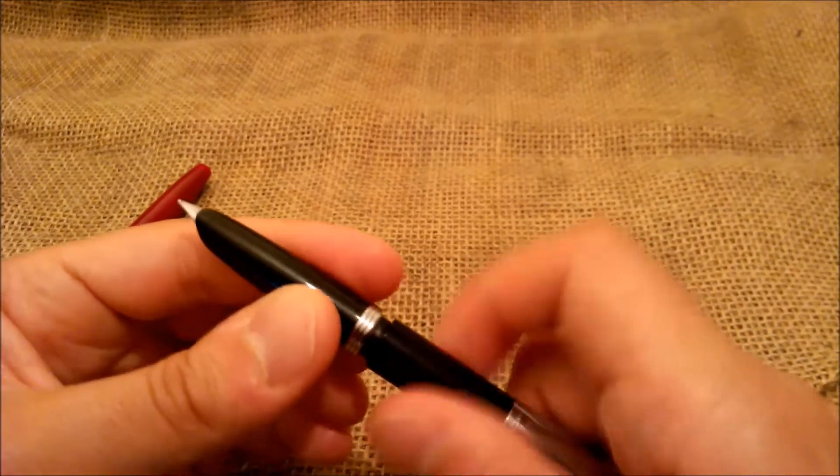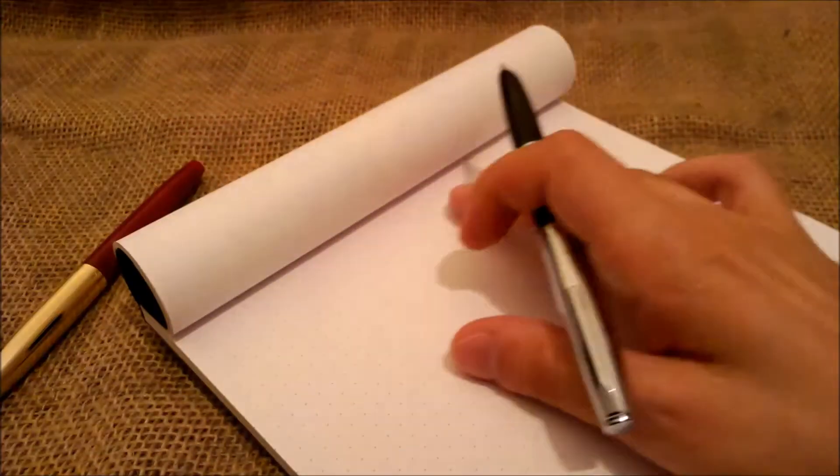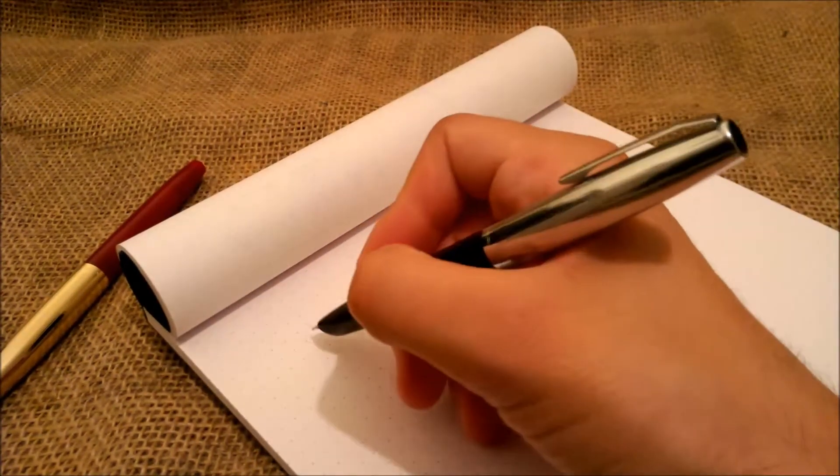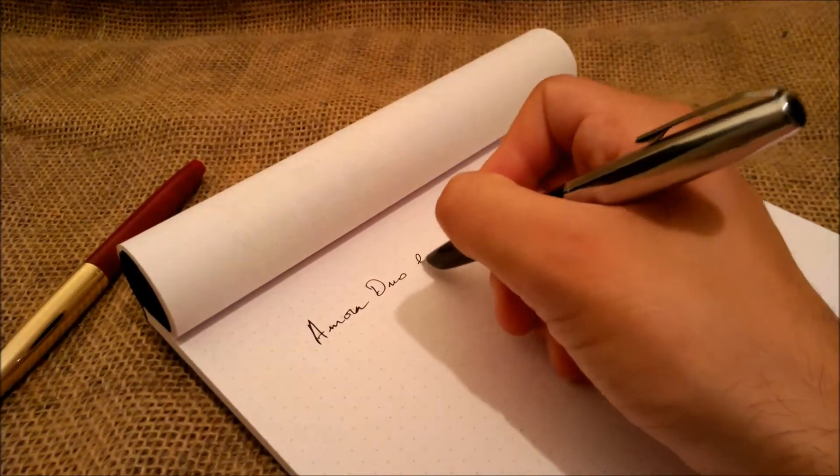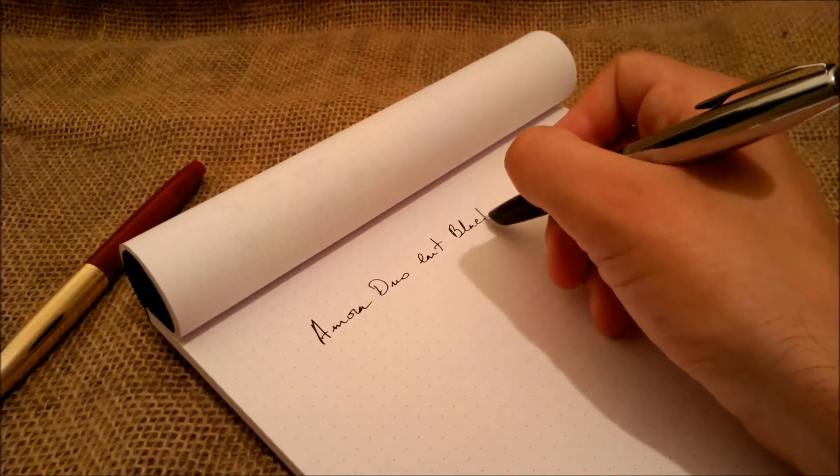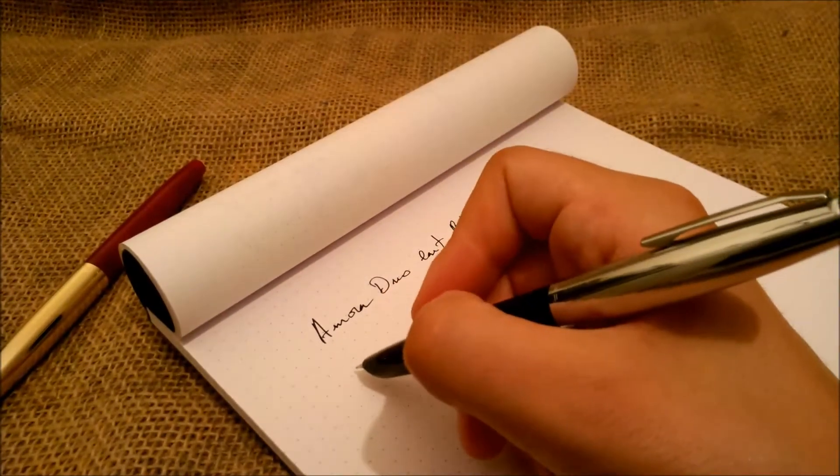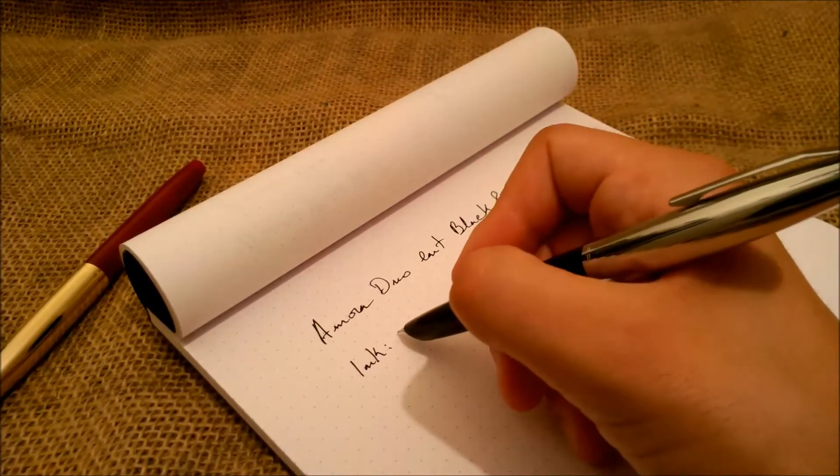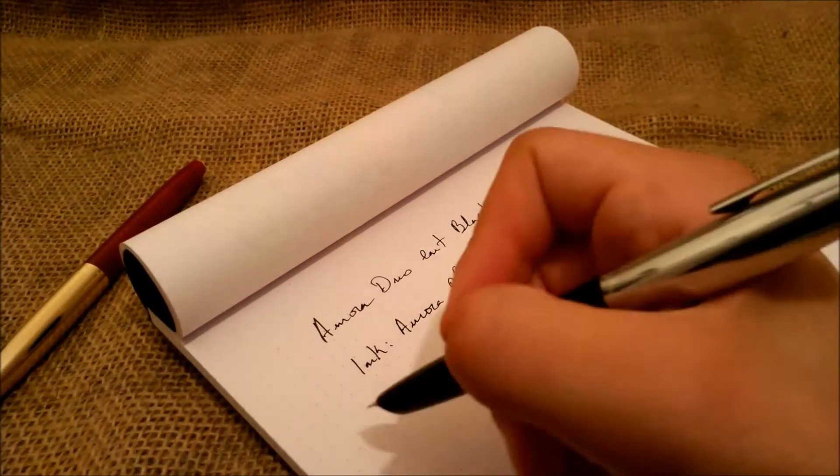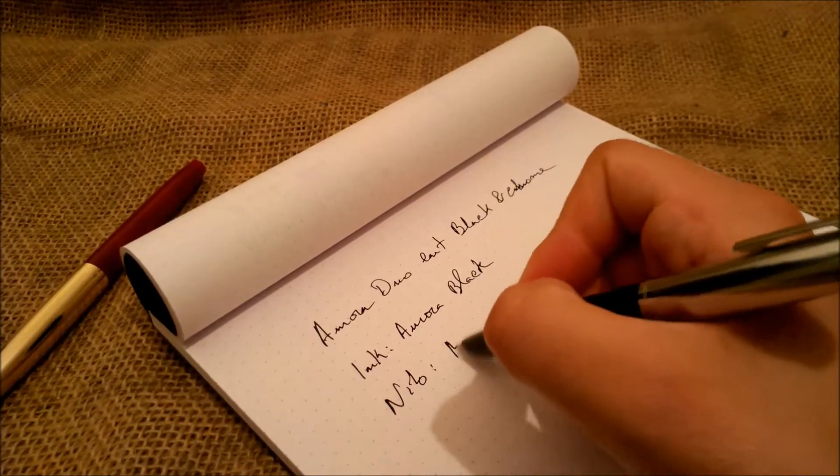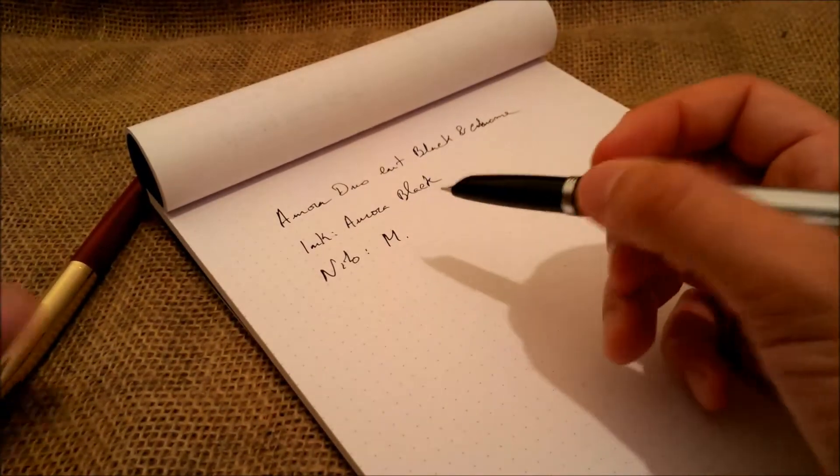Let's just try to see how it writes in a short writing test. This pen, let's start to write. This is an Aurora Duo card, black and chrome, the ink. The ink is the marvelous Aurora black that comes with the pen. And the nib is an M nib, as the other one, but it is not as broad, I think.